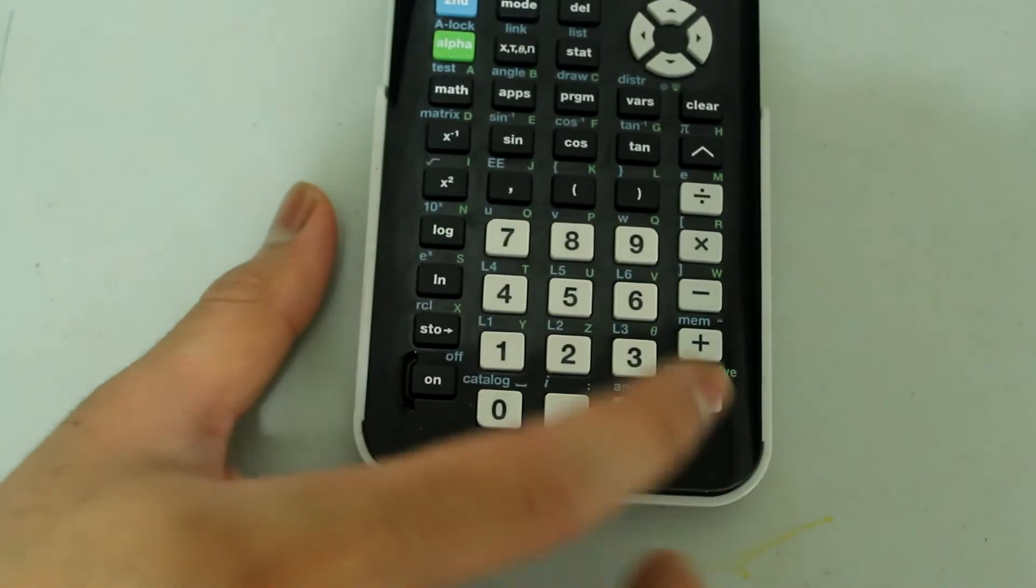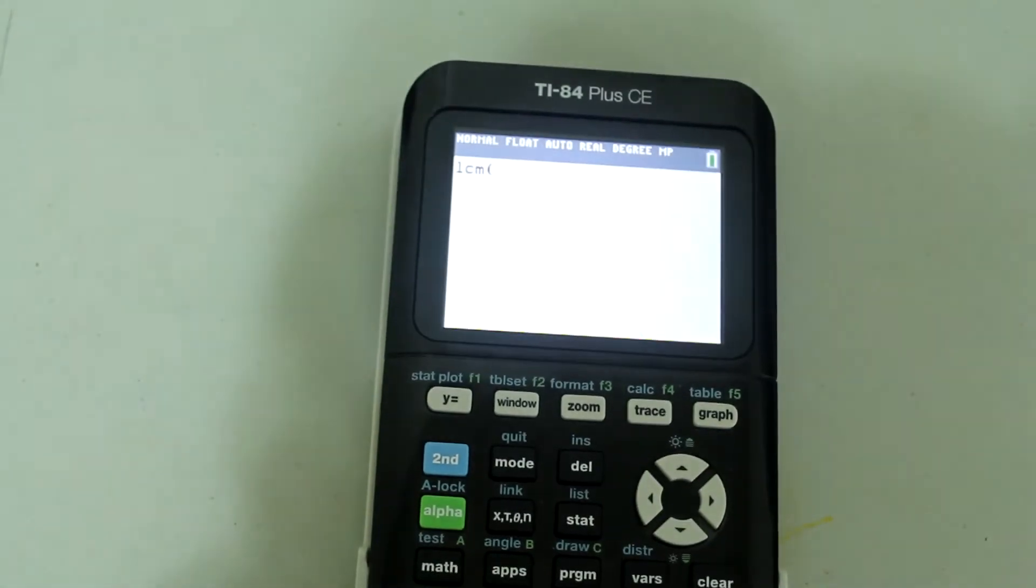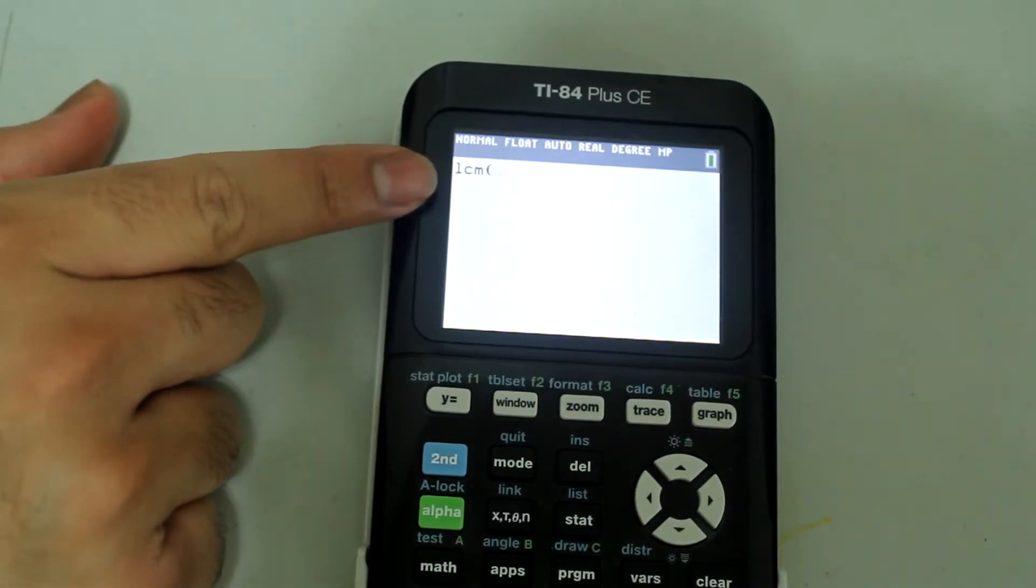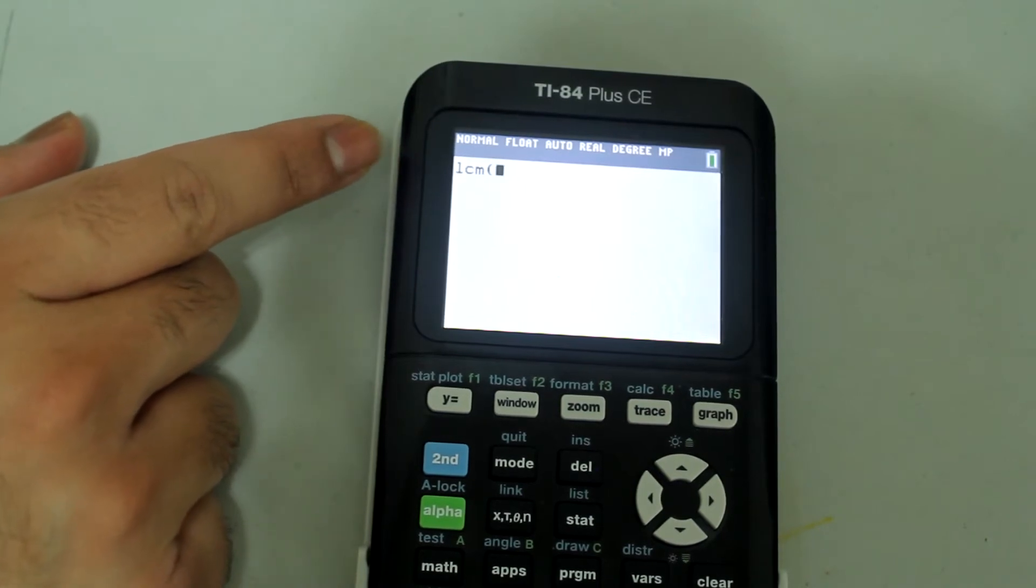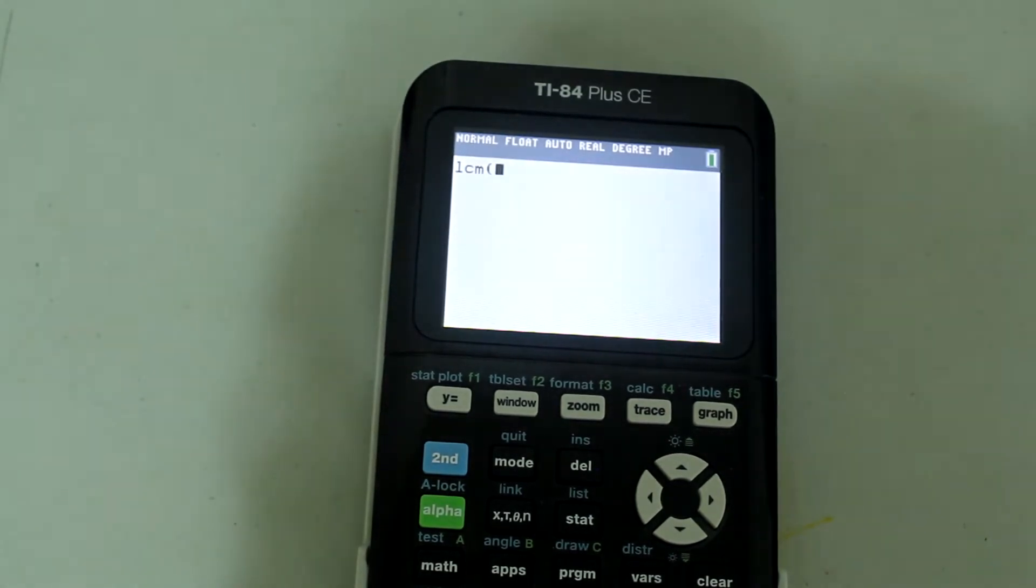Just press 8 on the number pad and this comes up where we have LCM with the open parenthesis. I'm going to type in the two numbers for which I want the least common multiple. I'm going to try and find the least common multiple for 5 and 7.